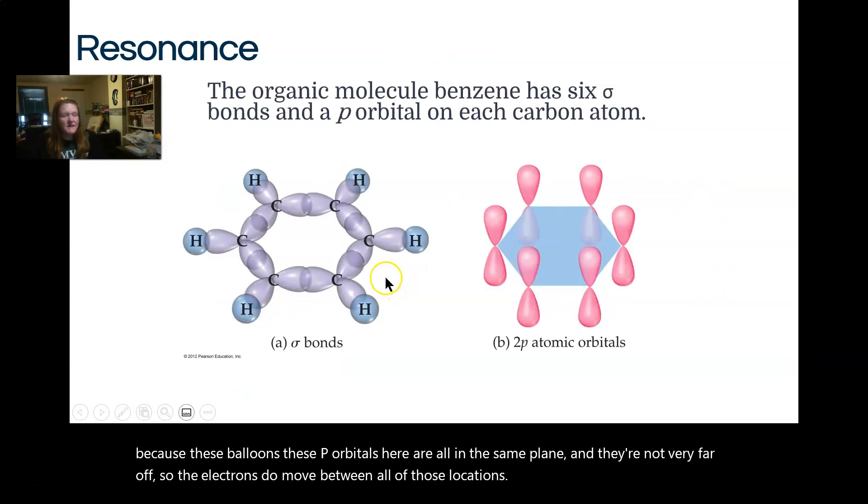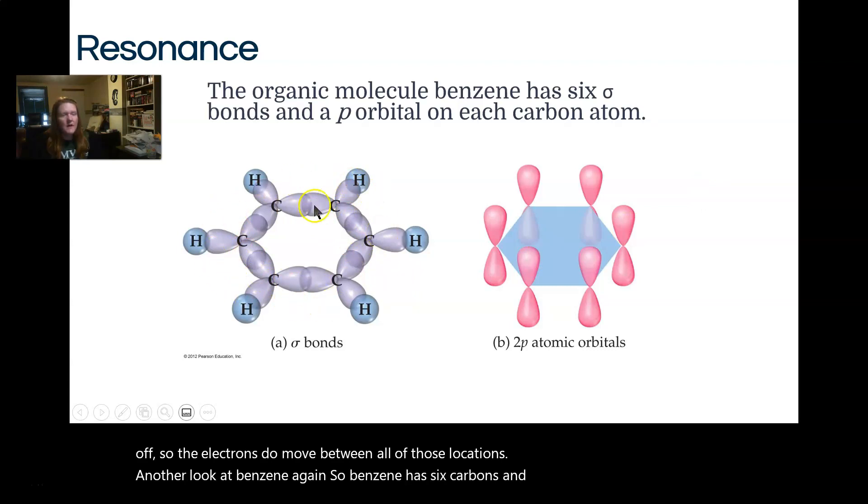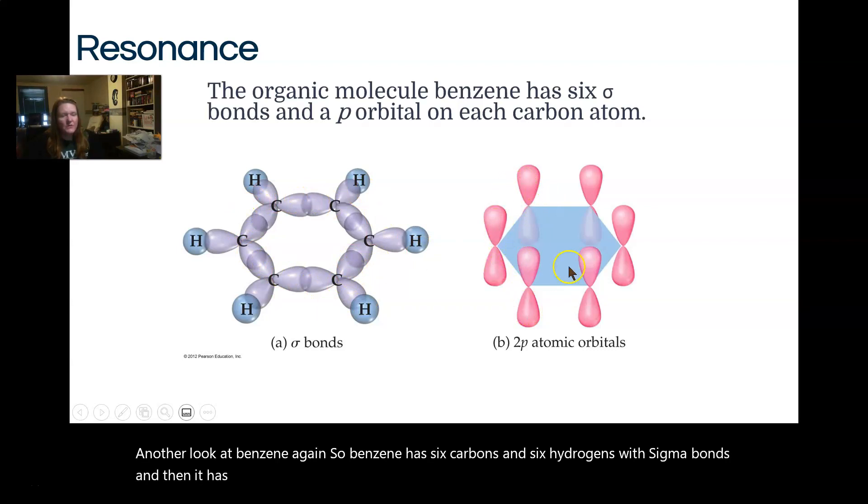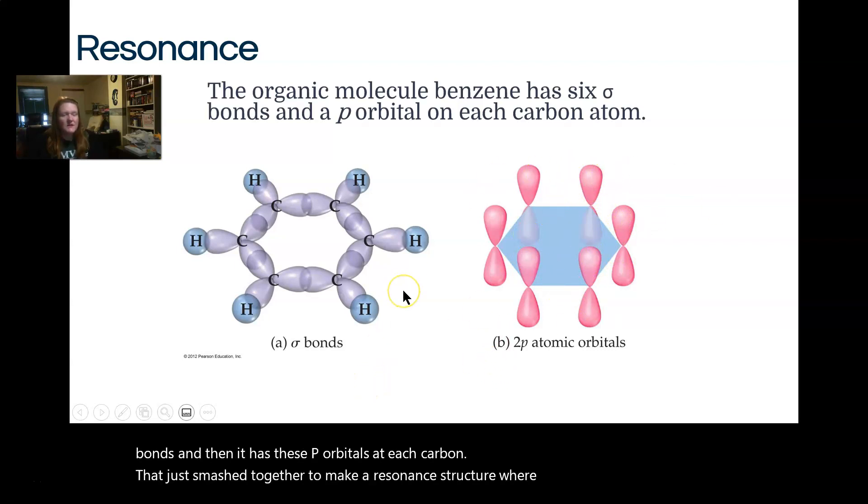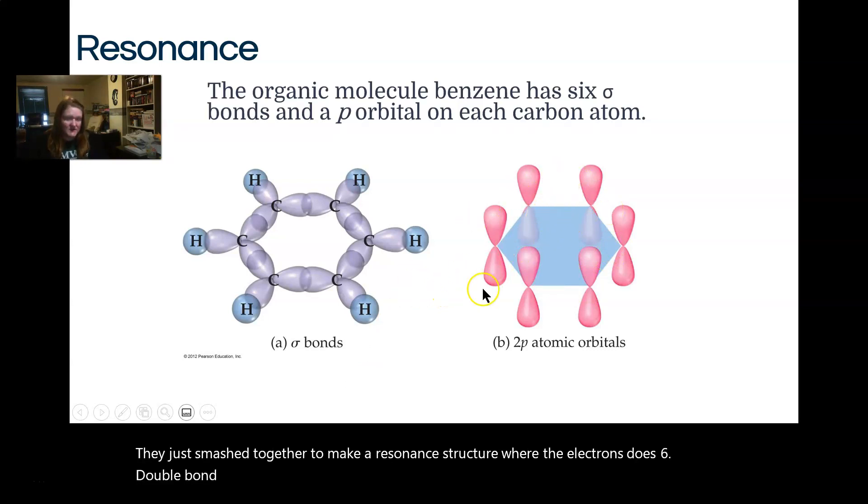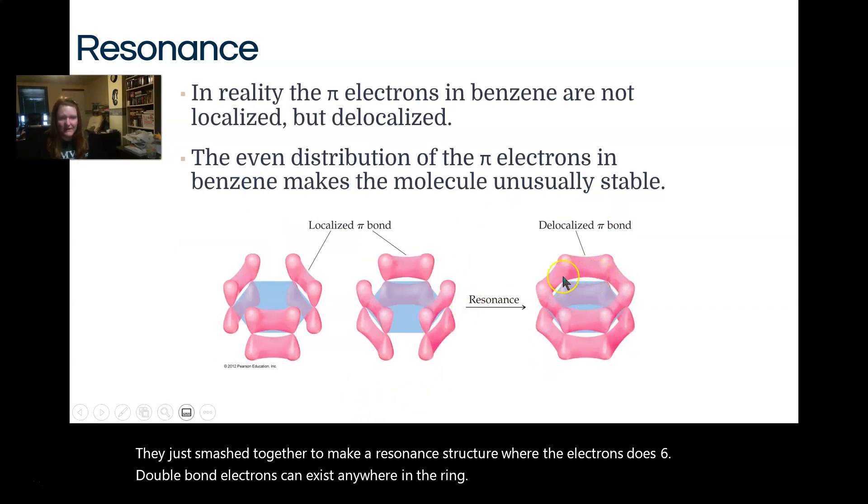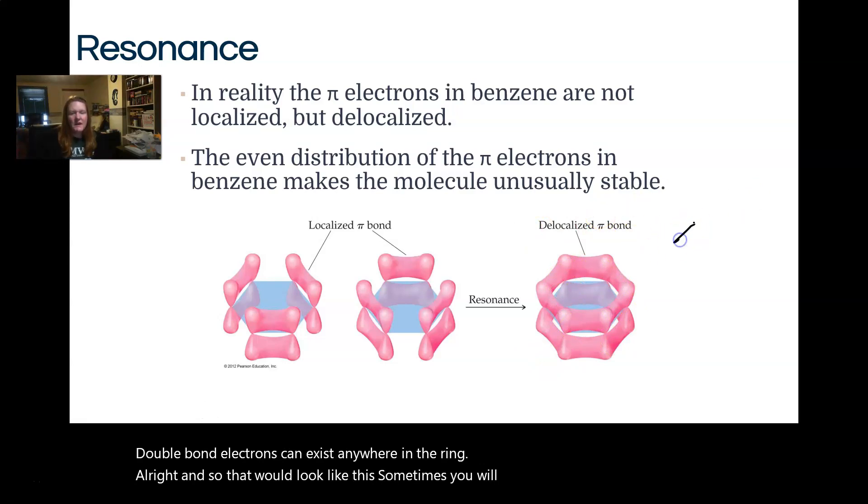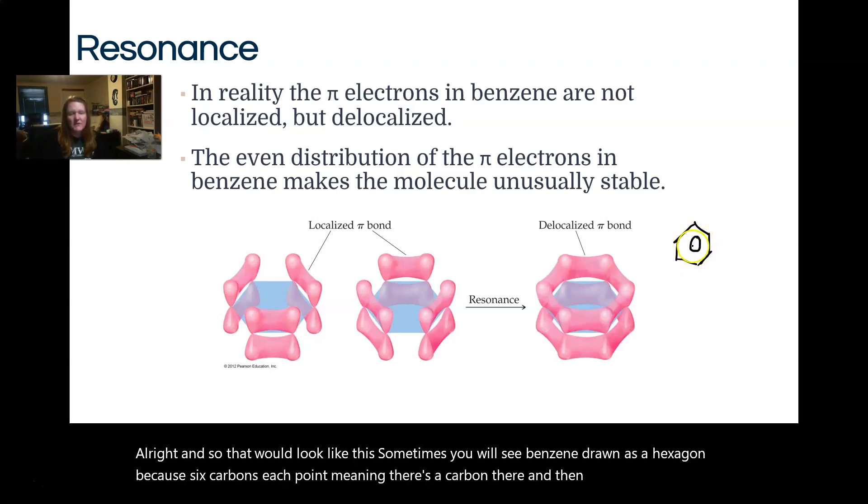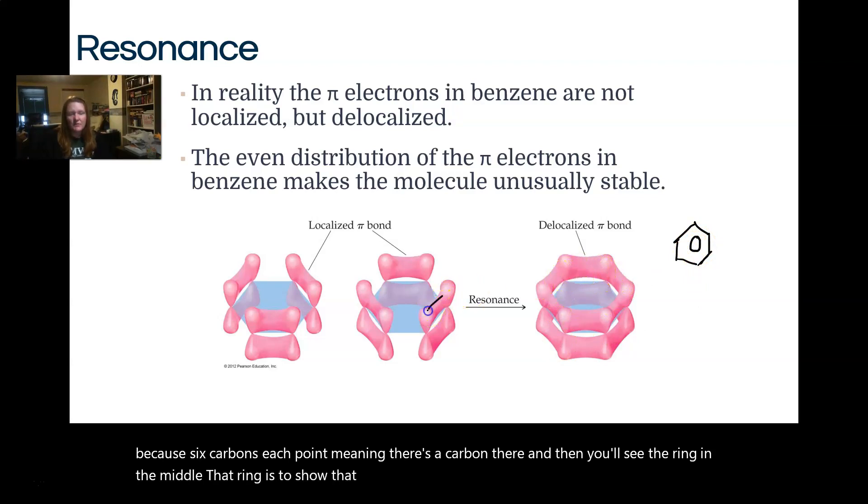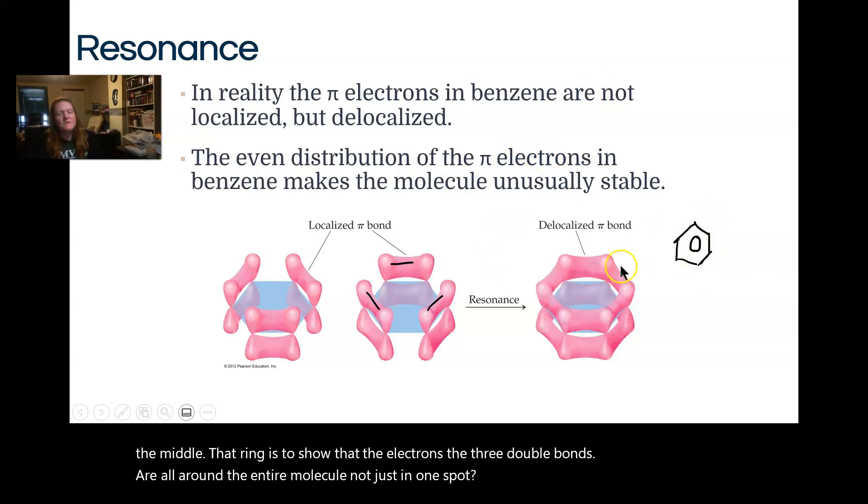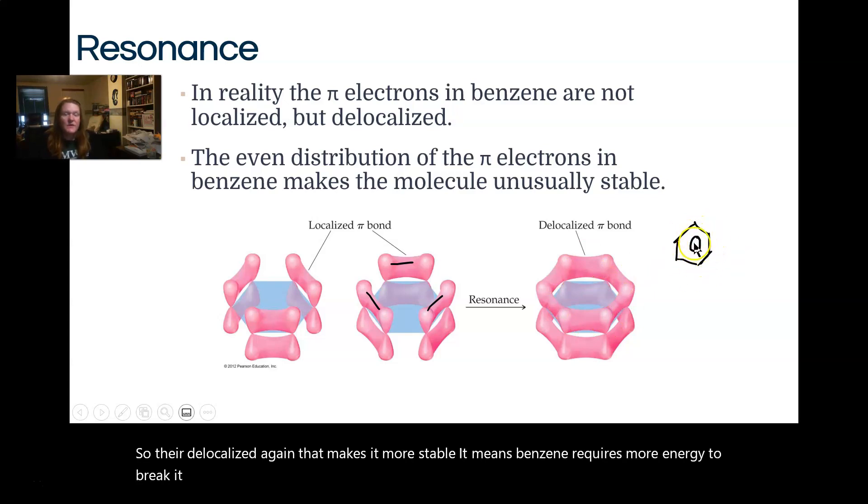Another look at benzene again. Benzene has six carbons and six hydrogens with sigma bonds, and then it has these pi orbitals at each carbon that just smash together to make a resonance structure where the electrons, the six double bond electrons, can exist anywhere in the ring. Sometimes you will see benzene drawn as a hexagon because six carbons, each point meaning there's a carbon there. And then you'll see the ring in the middle. That ring is to show that the electrons, these three double bonds, are all around the entire molecule, not just in one spot. So they're delocalized. That makes it more stable. It means benzene requires more energy to break it apart than if we didn't have the delocalization.